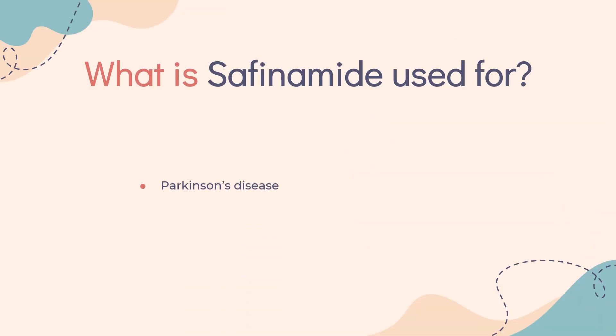What is Safinamide used for? Safinamide is indicated as an add-on treatment to levodopa, with or without other medicines, for Parkinson's disease.